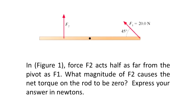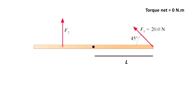From this question we extract that we are searching for the magnitude of the force F2. From this picture we see that the force F1 is applied at the right hand side of the rod. It is going up to the left at an angle of 45 degrees with respect to the horizontal and its magnitude is 20 Newtons. The distance from the pivot to where force F1 is applied is going to be defined as L.